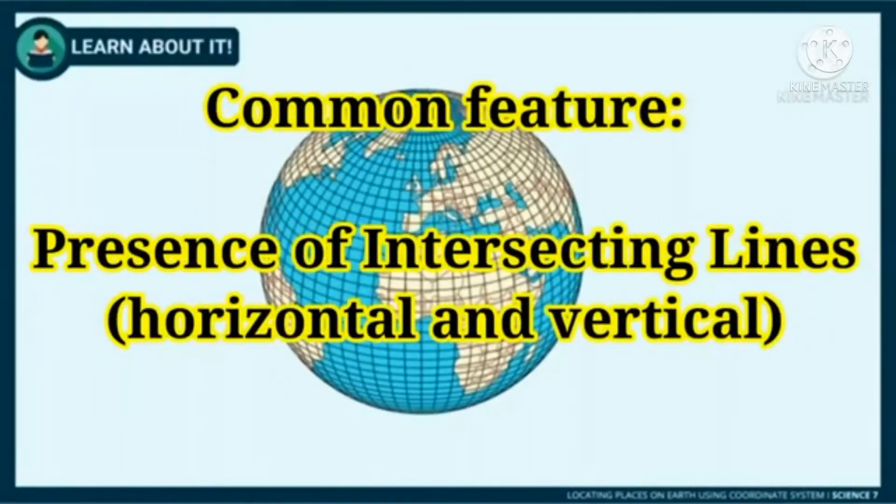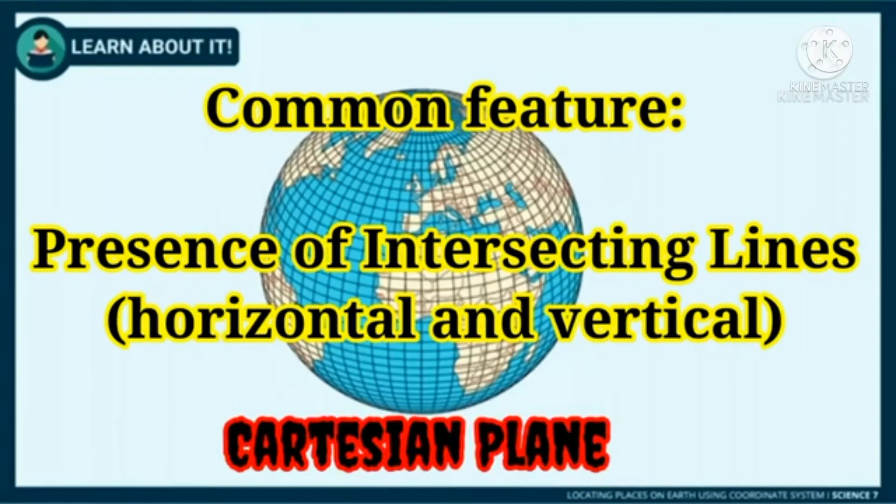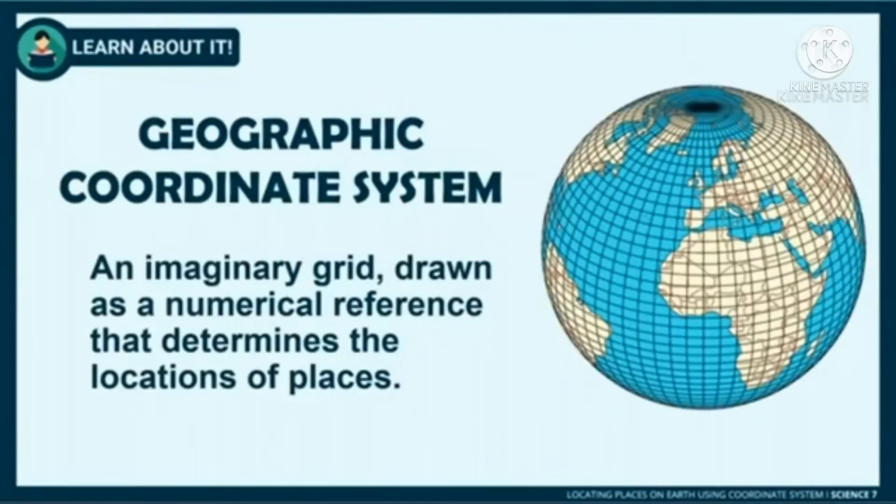A common feature of maps and globes is the presence of intersecting horizontal and vertical lines to form a Cartesian plane. These imaginary lines form a grid collectively known as the Geographic Coordinate System. The Geographic Coordinate System does not exist physically, but it was drawn as a numerical reference that determines the locations of places.